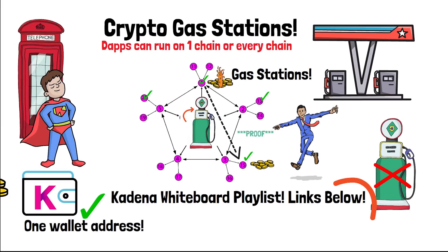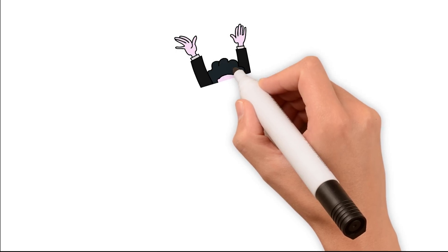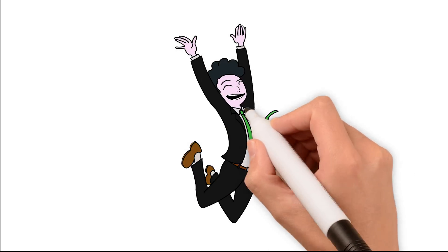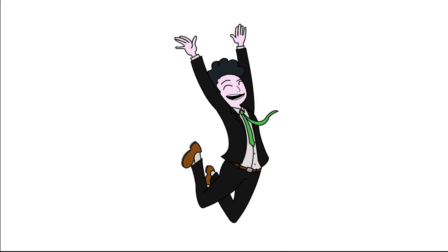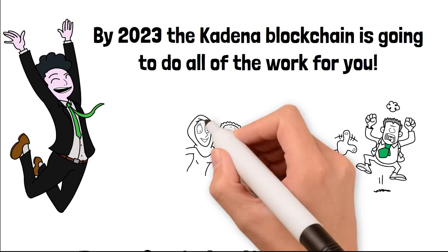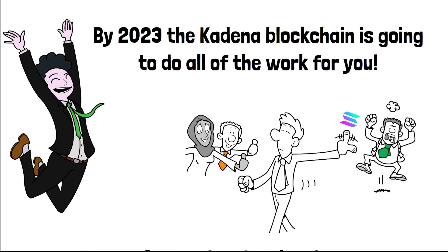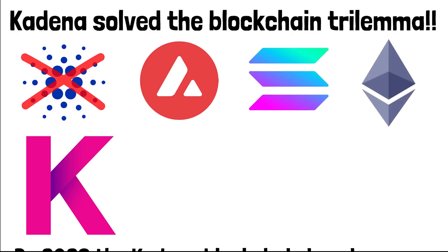By 2023, the end user won't need to know what chain a product or dApp is built on — the Kadena blockchain will do all the work in the back end. When Kadena scales up to a thousand blockchains, people using the Kadena network will need to know zero about blockchain to interact with the ecosystem. Kadena solved the blockchain trilemma — something no other layer-one blockchain has ever been able to do — and they got a patent on it.